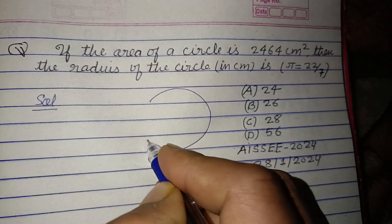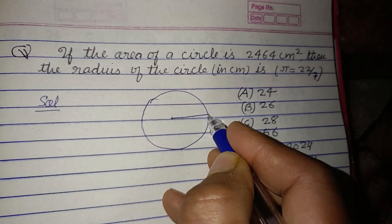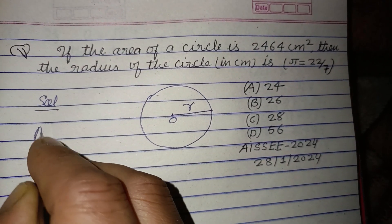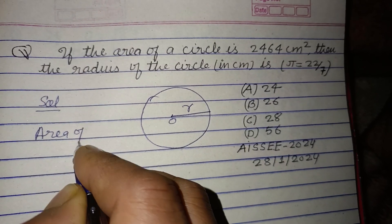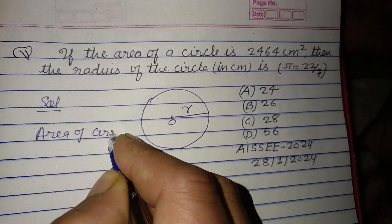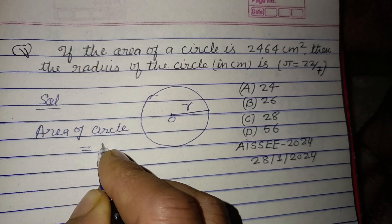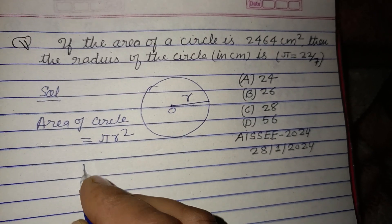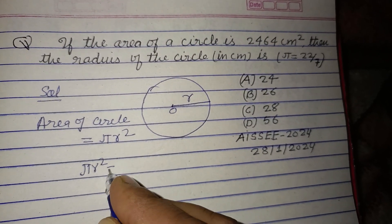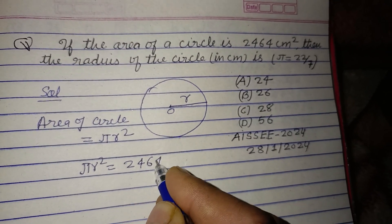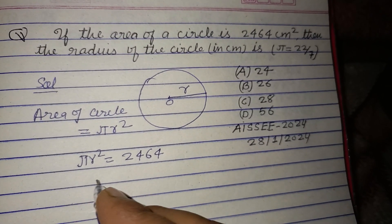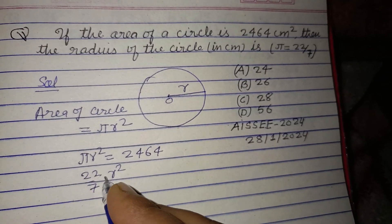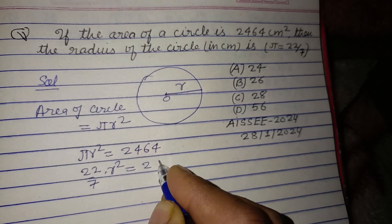Area of circle equals πr². So πr² is given to us as 2464 centimeter square. π is 22 over 7 into r² equal to 2464.